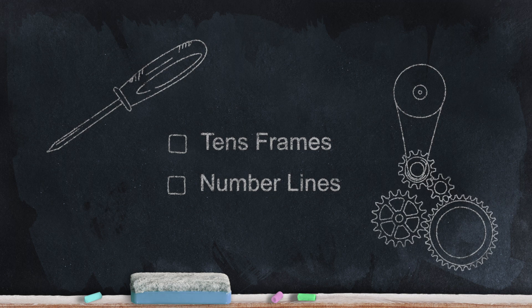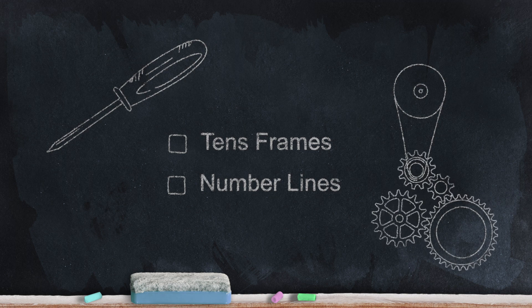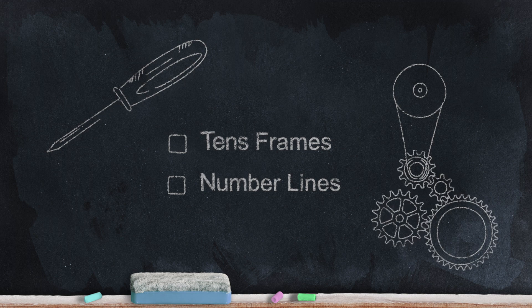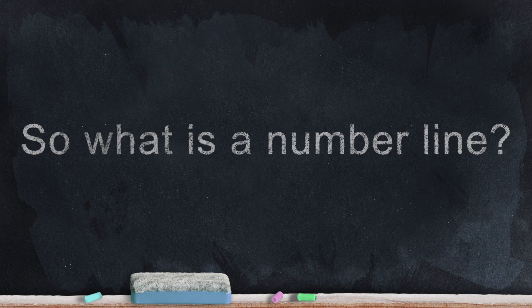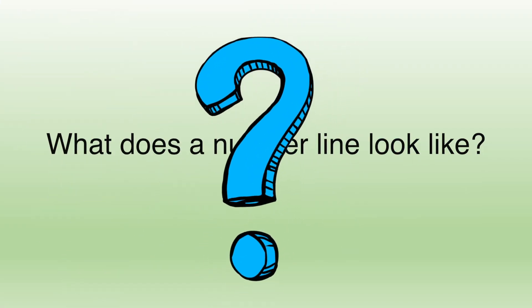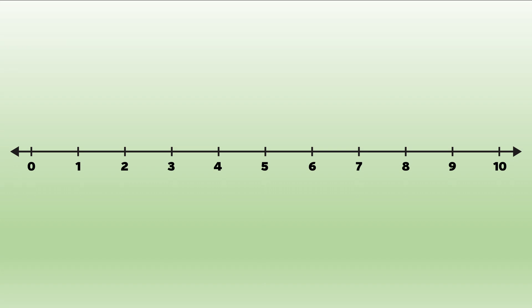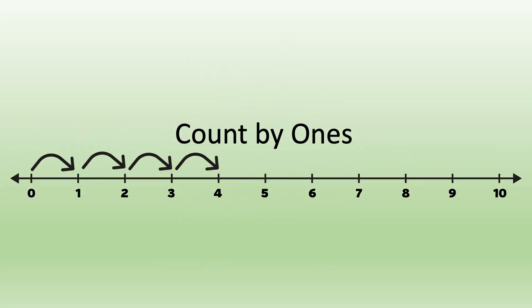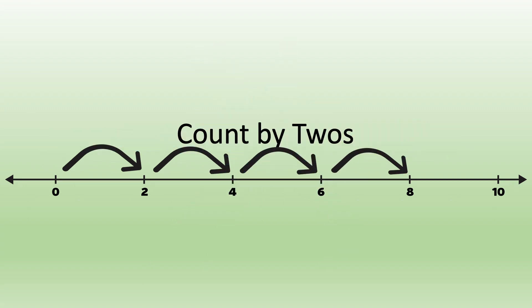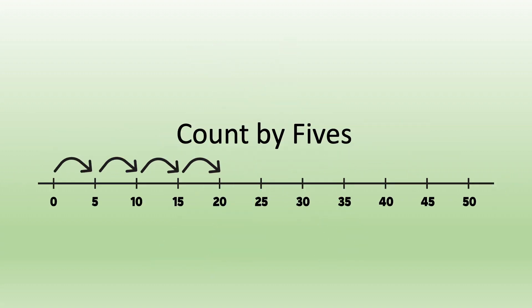Number lines can be really helpful with basic addition and subtraction facts. So what does a number line look like? It's a line that's numbered. It usually starts at zero, and numbers go up as they go to the right. Number lines usually go up by one at a time, but we can use a number line to skip count, too. We can count by ones, count by twos, count by fives, or count by tens.